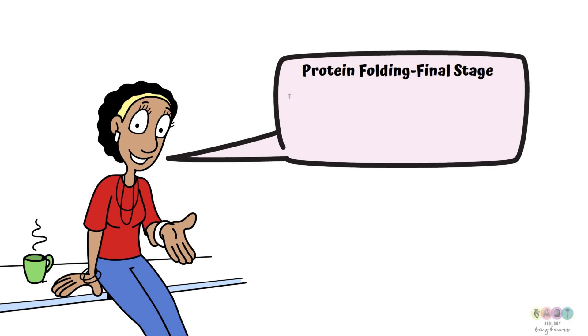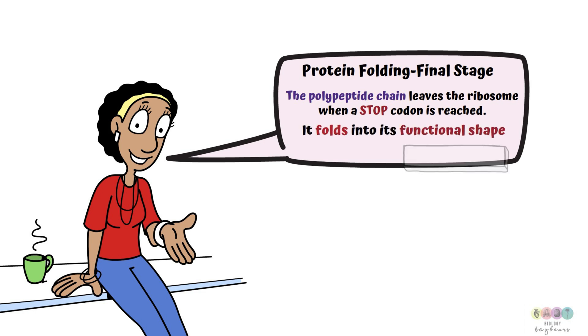And this is when the polypeptide chain leaves the ribosome. It leaves the ribosome when a stop codon is reached and then the polypeptide chain will simply fold into its functional shape. And you just have to give this a very brief mention, a sentence.